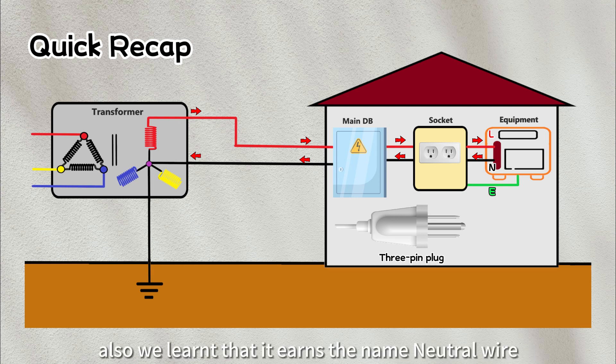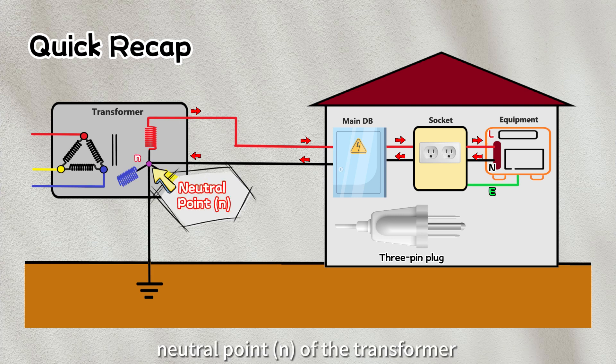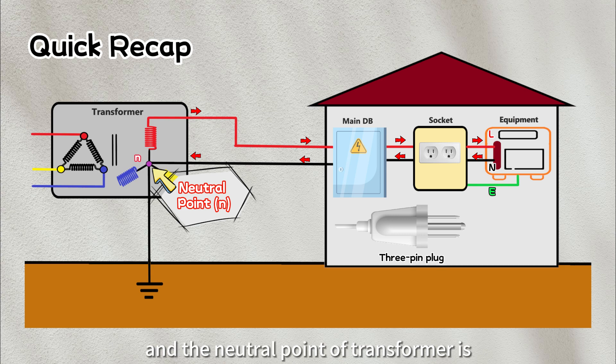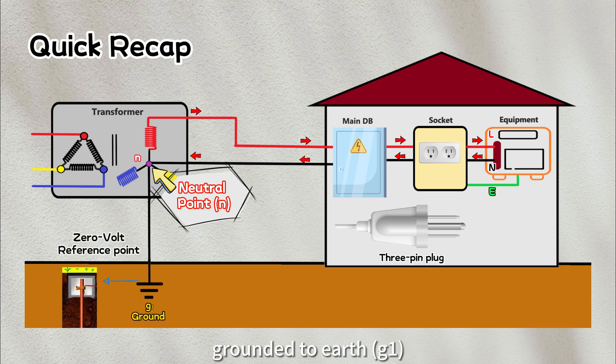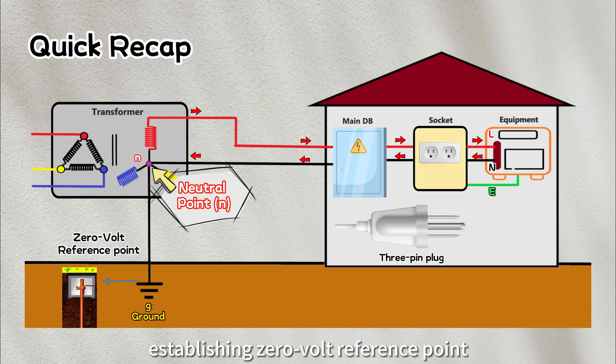Also, we learned that it earns the name neutral wire because it connects to the neutral point of the transformer, and the neutral point of transformer is grounded to earth, establishing zero-volt reference points.